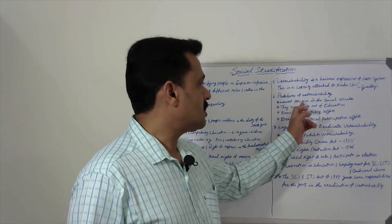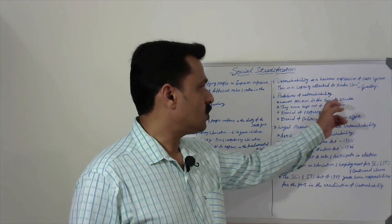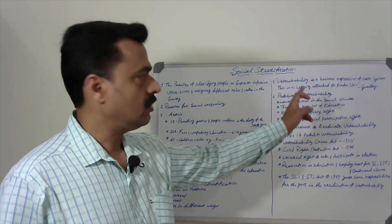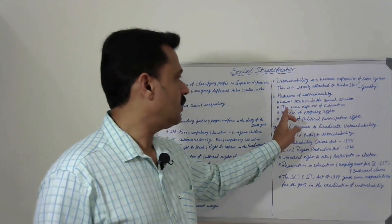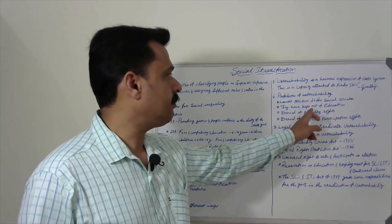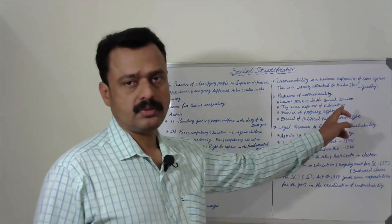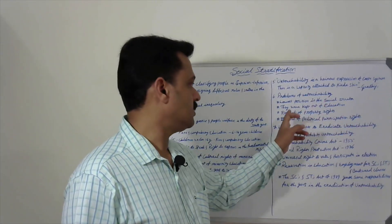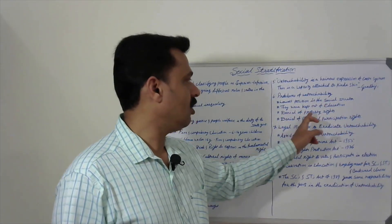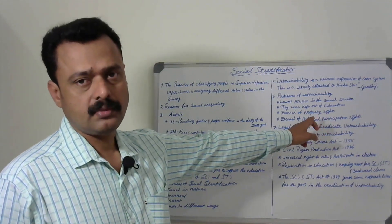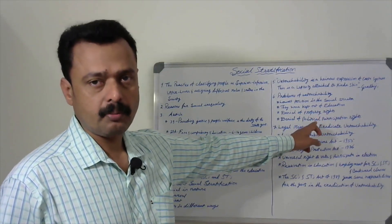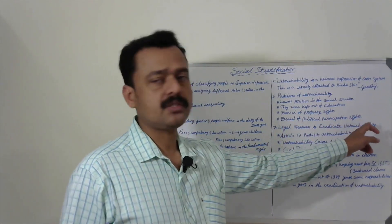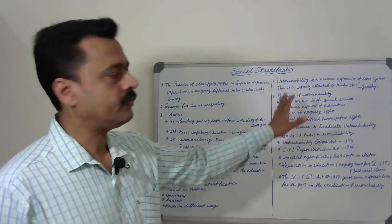What are the problems of untouchability? Untouchables have the lowest position in the social strata. They were kept out of education and denied educational opportunities. They do not have property rights, and they are denied political participation. These are the problems of untouchability.